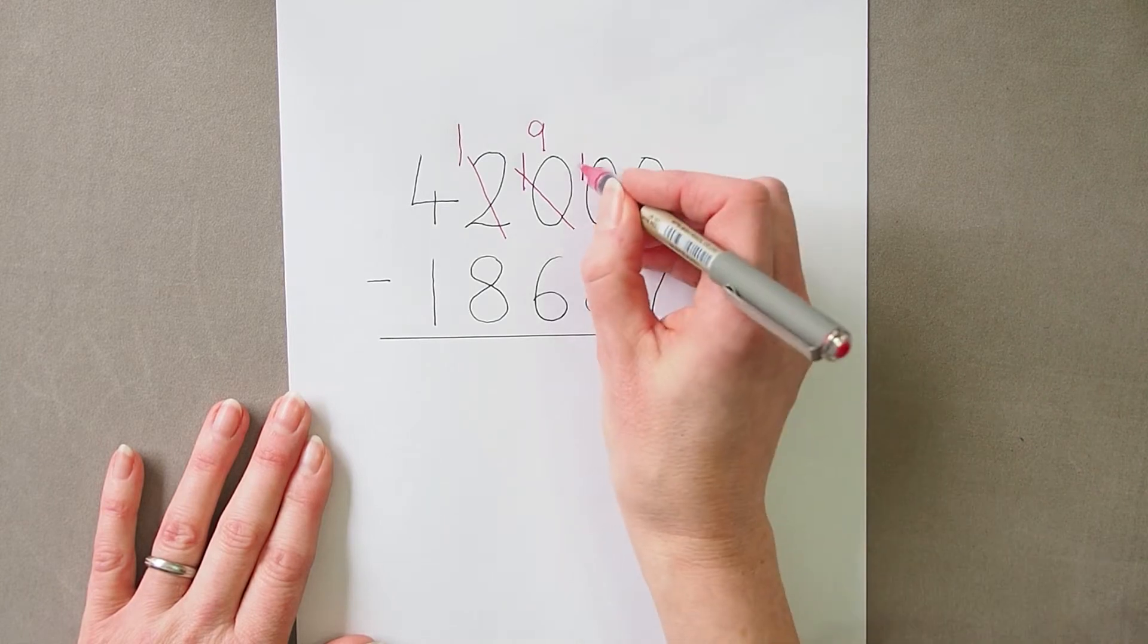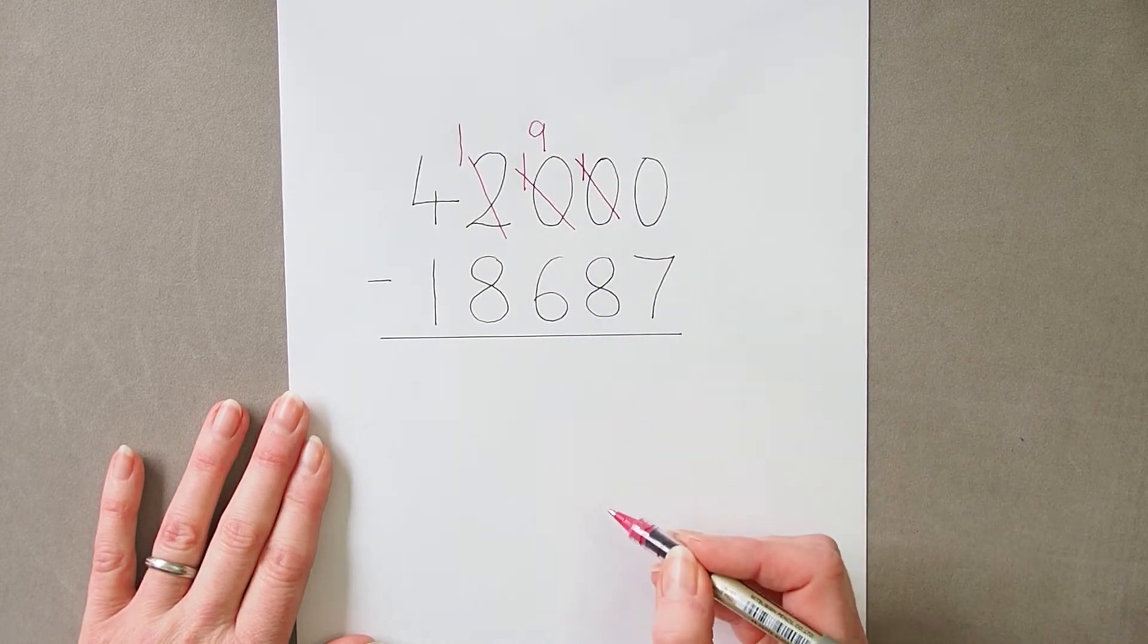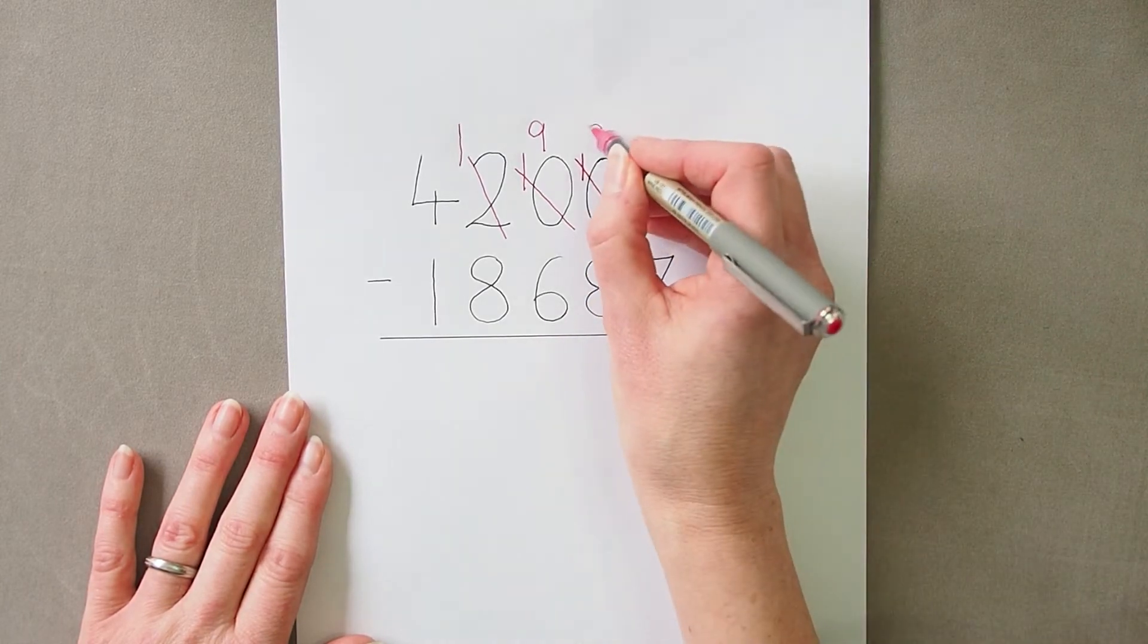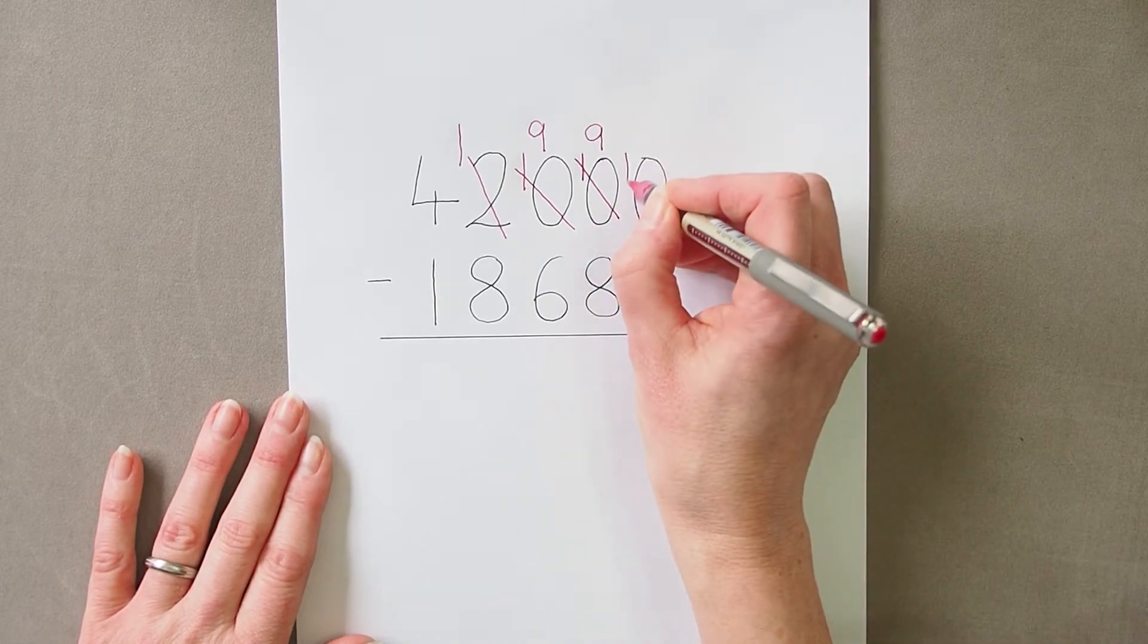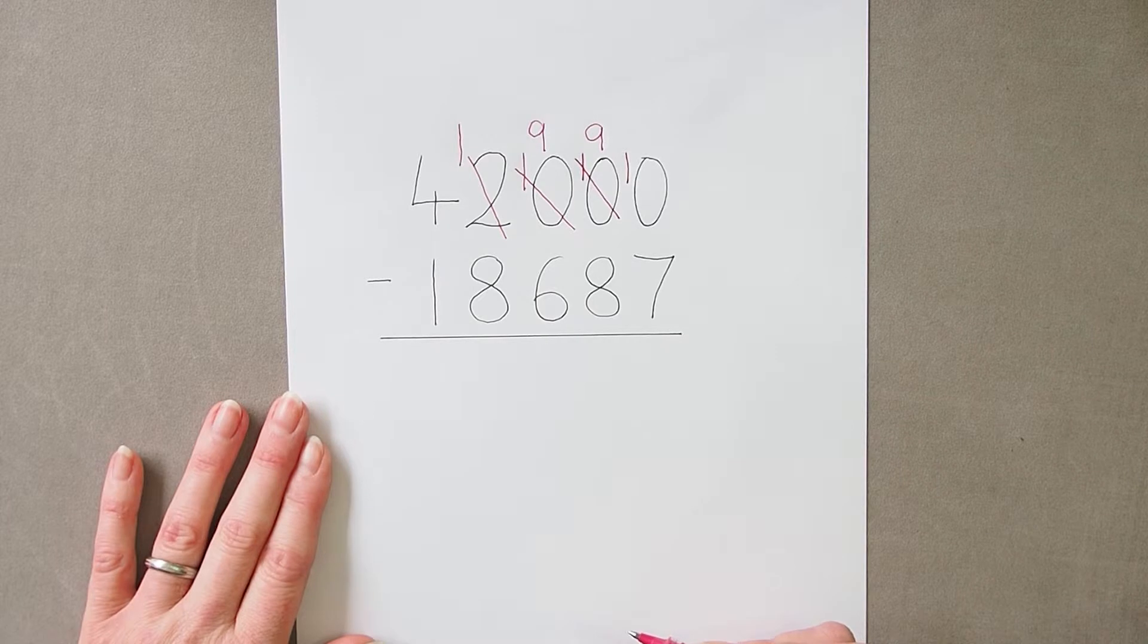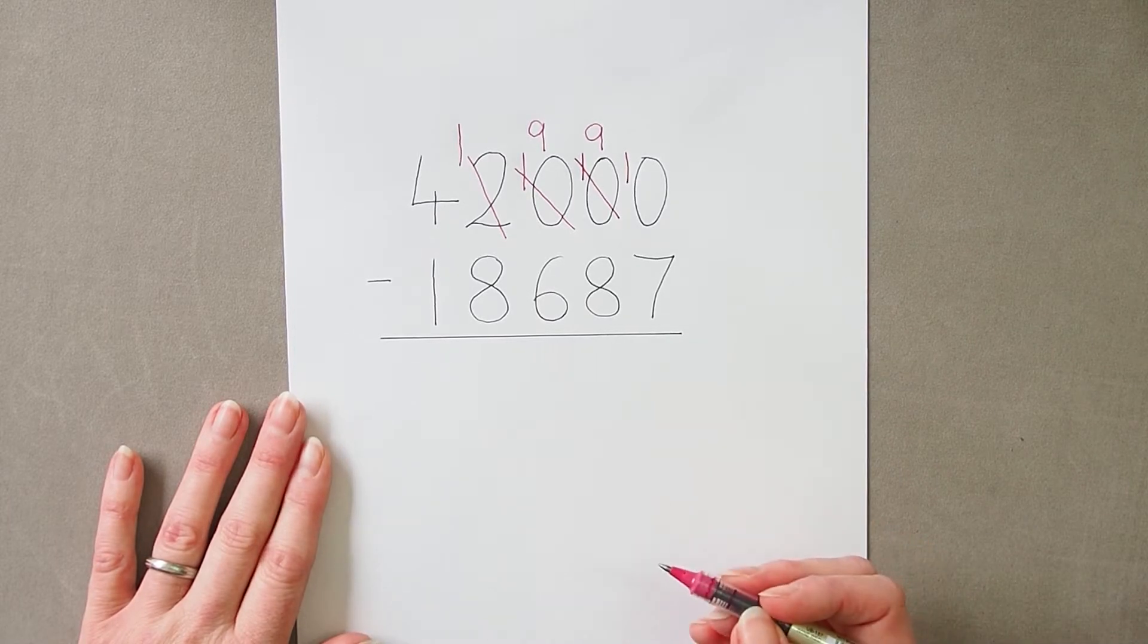I can now take one of those tens, leaving nine tens, and I can put that ten into the units column. And now I can work out that calculation.